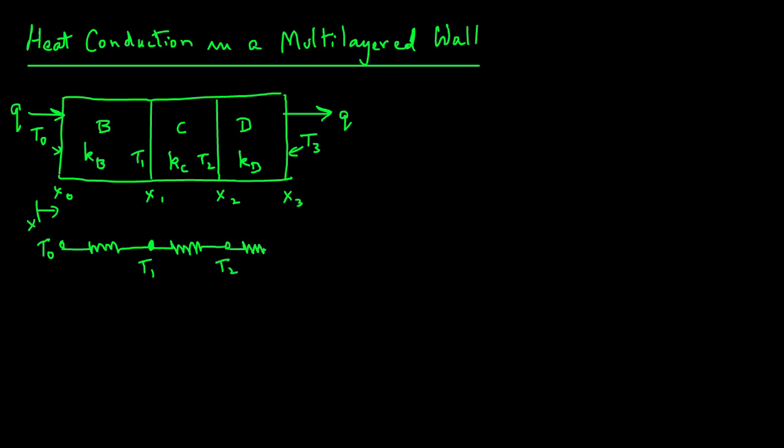The thermal resistance values are R, and let's just call it RB, RC, and RD. Those are the thermal resistances for layers B, C, and D. The individual wall thicknesses are LB, LC, and LD.